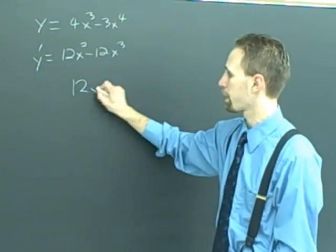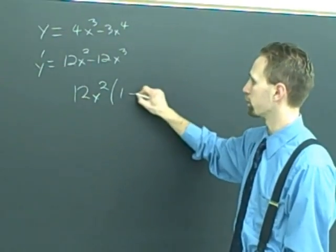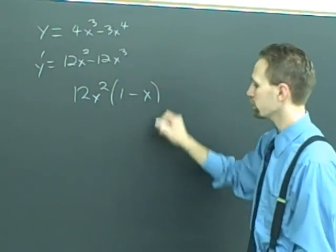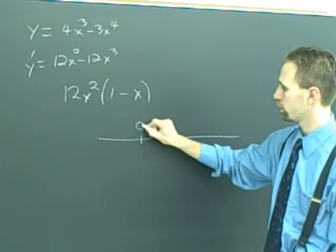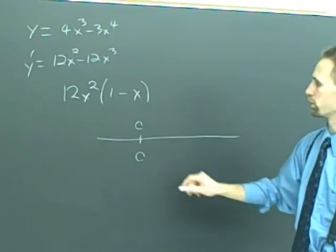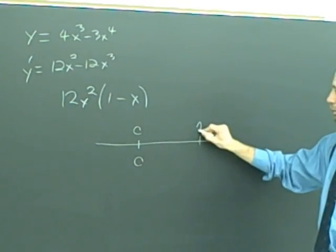So we'll factor it out. So here we go, 1 minus x, and then you pull it up. The critical numbers are located at 0 and at x equals 1.